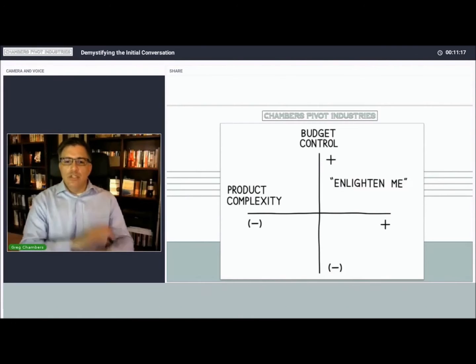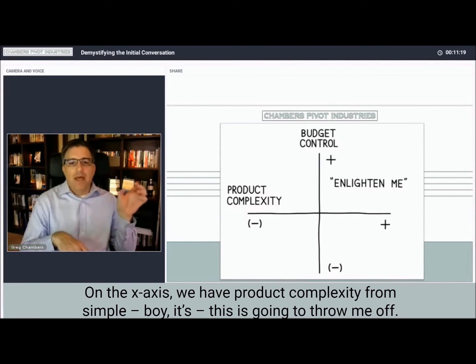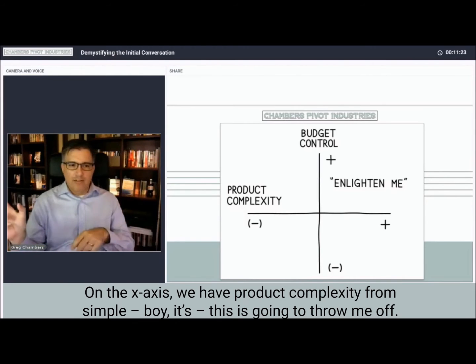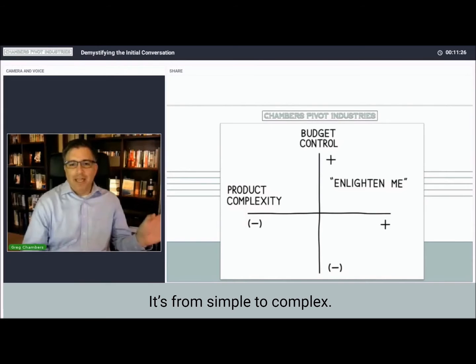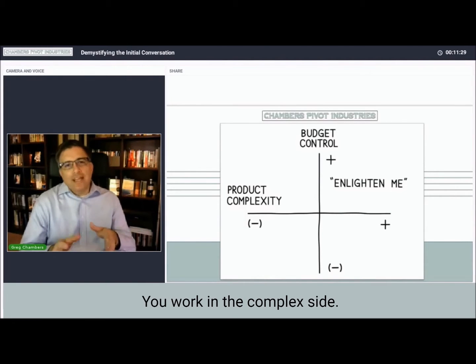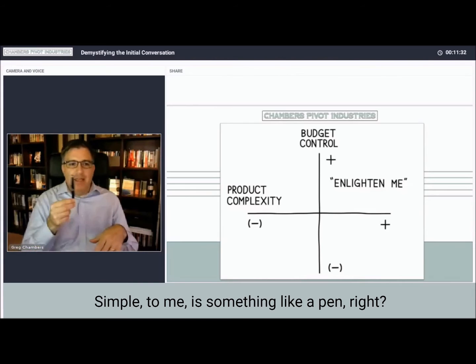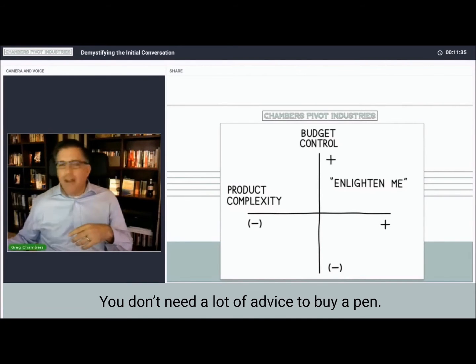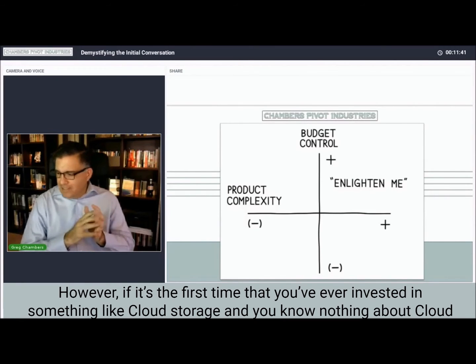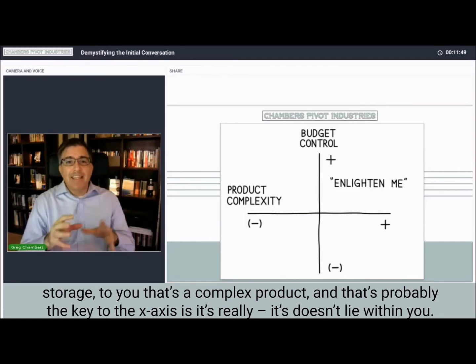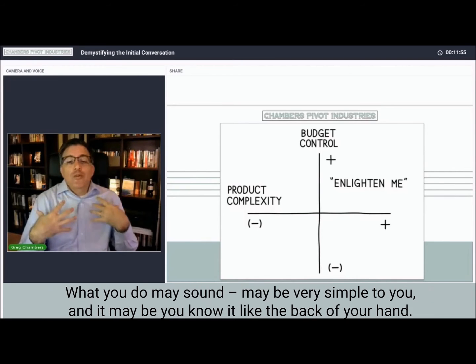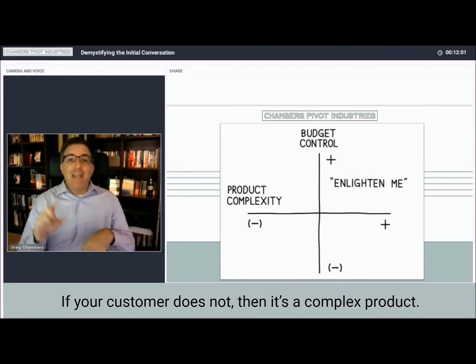On the x-axis we have product complexity from simple to complex. Simple to me is something like a pen - you don't need a lot of advice to buy a pen. However, if it's the first time you've ever invested in something like cloud storage and you know nothing about it, to you that's a complex product. The key to the x-axis is it doesn't lie within you - what you do may be very simple to you, but if your customer doesn't know it, then it's a complex product.